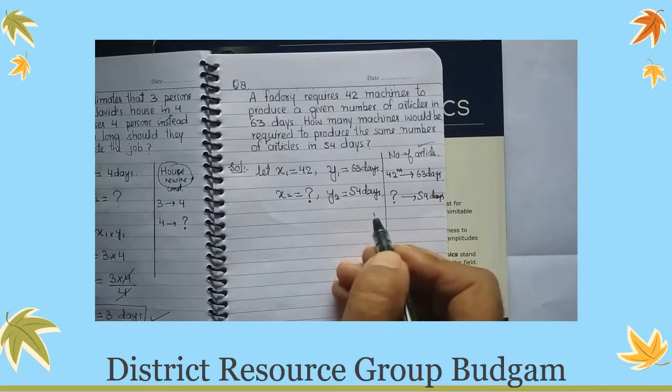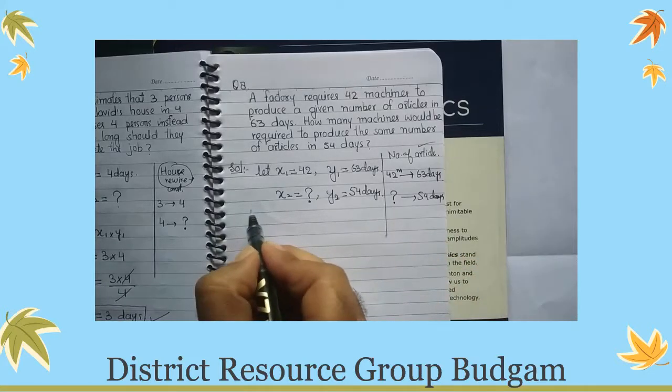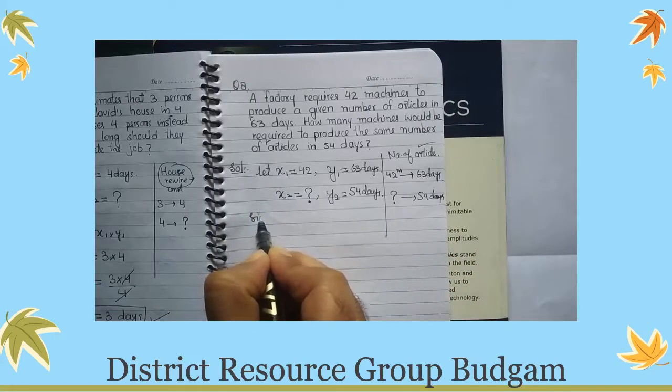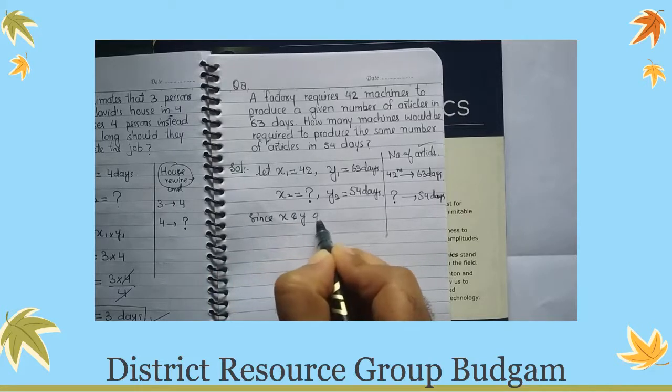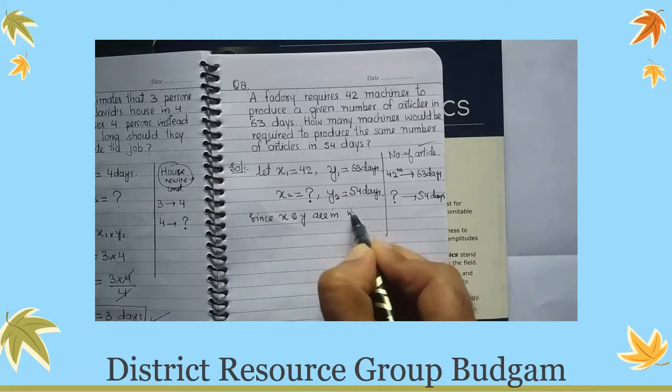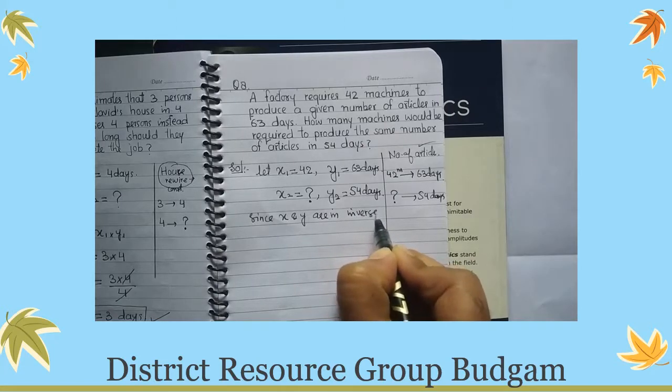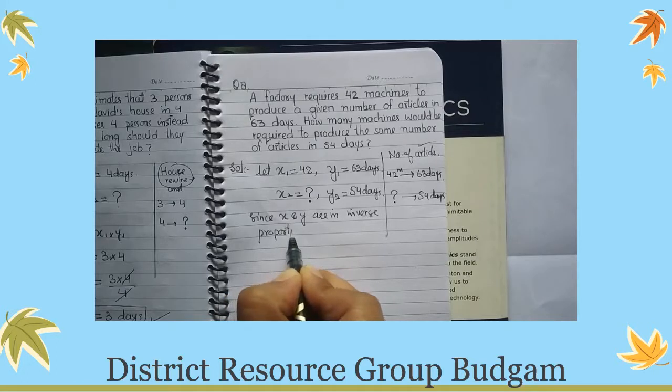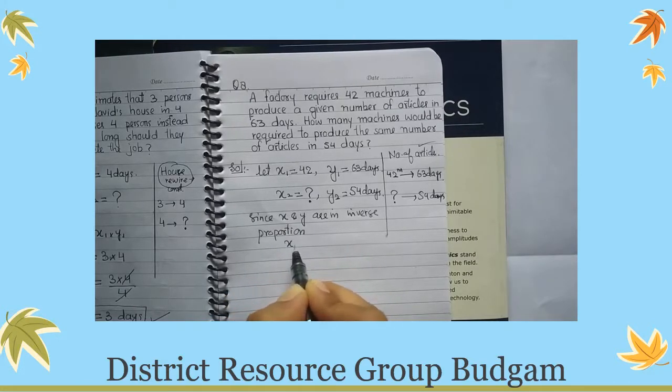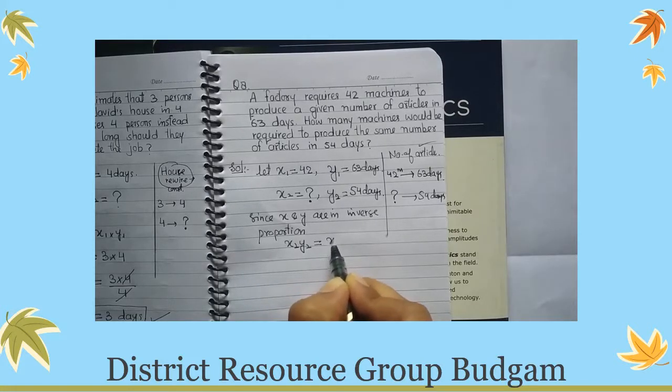Since x and y are in inverse proportion, jab yeh inverse proportion mein hai, toh x2 y2 will be equal to x1 y1.